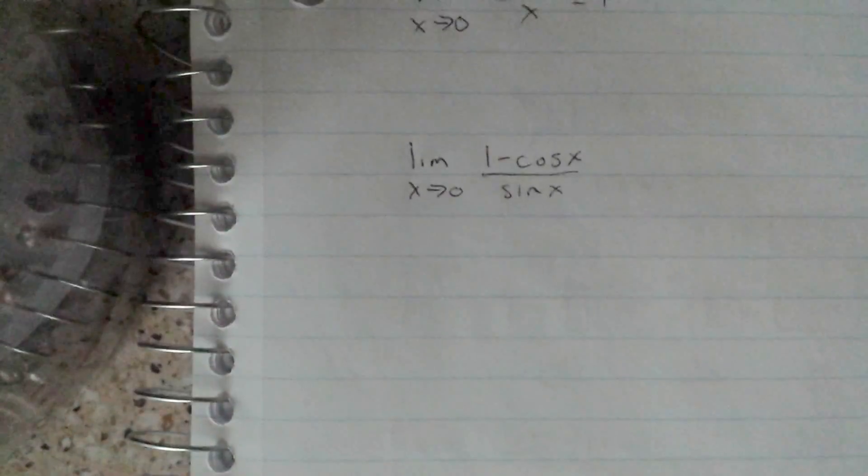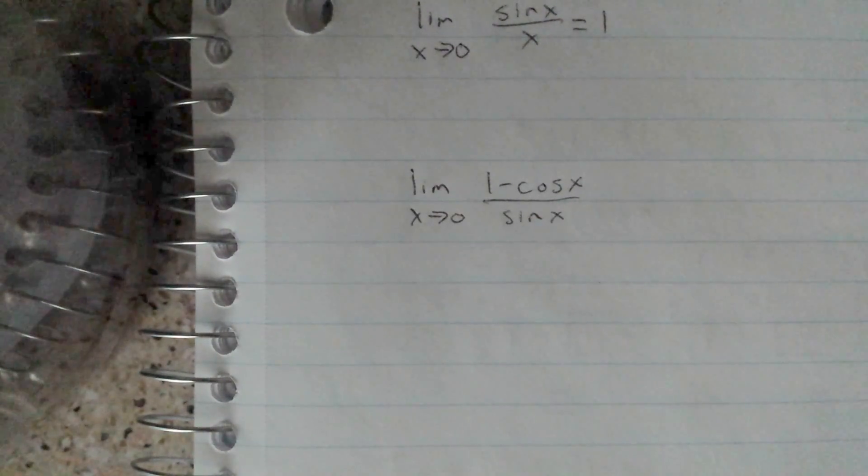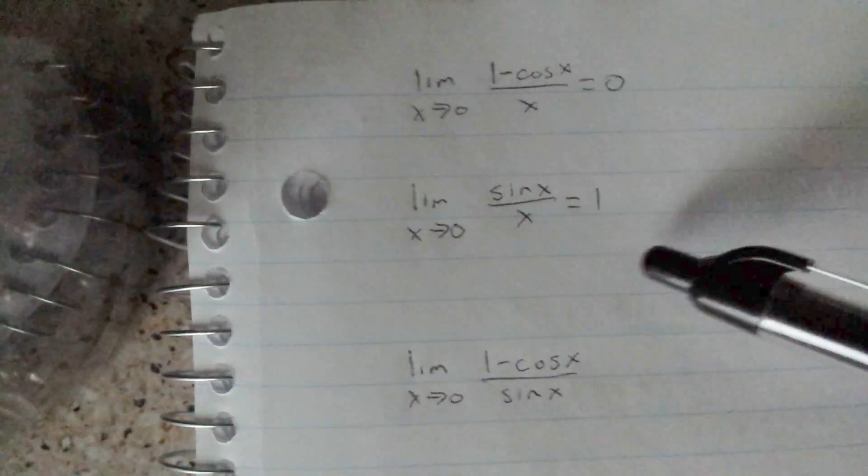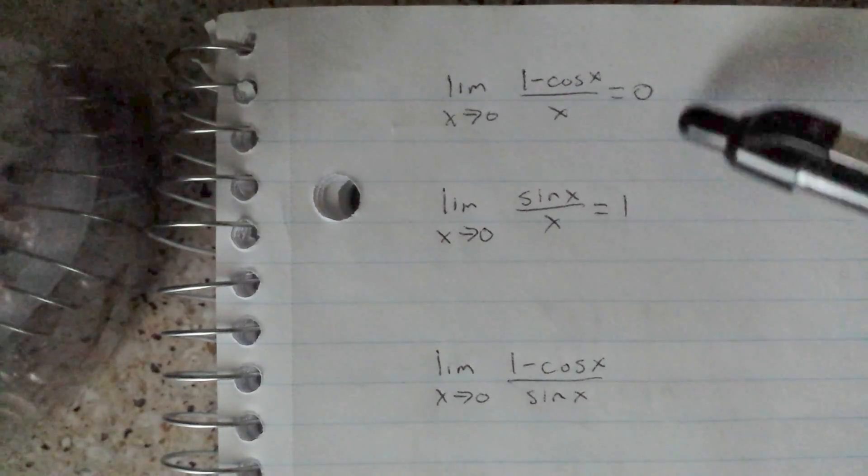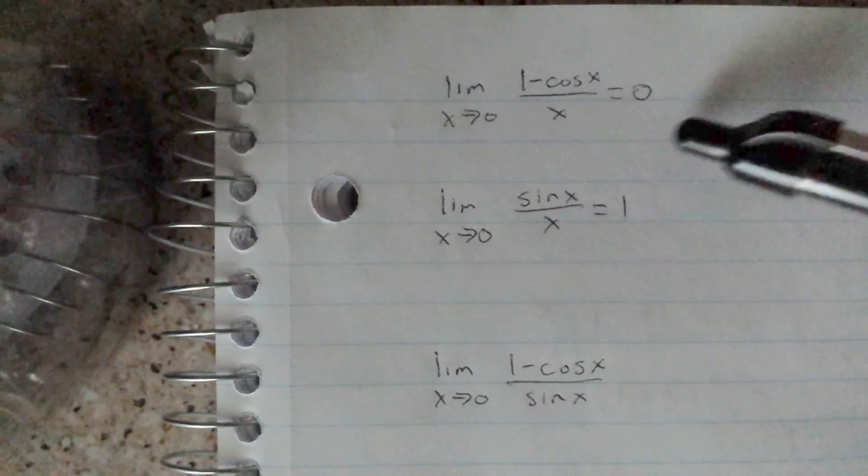To start this problem, when you solve trig problems like this, it's useful to know these two properties: limit as x approaches 0 of sine x over x equals 1, and 1 minus cosine x over x equals 0.